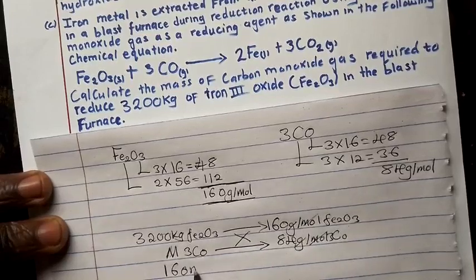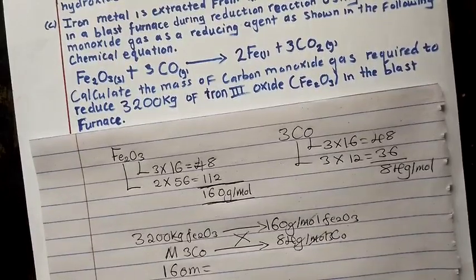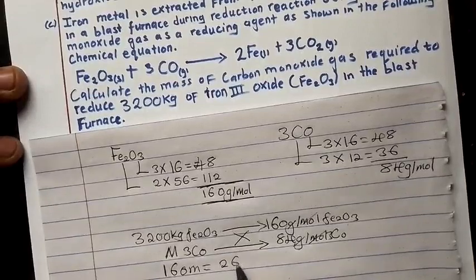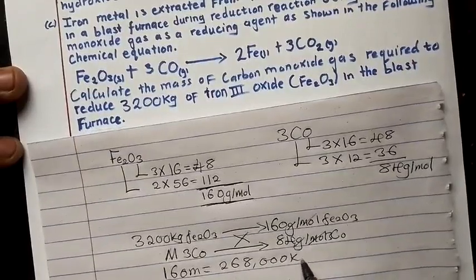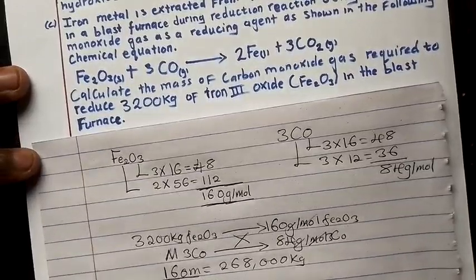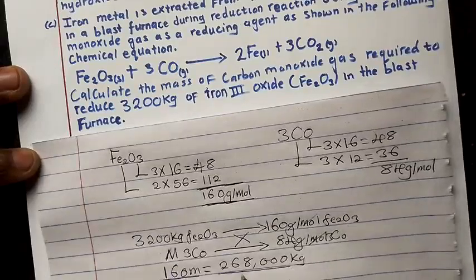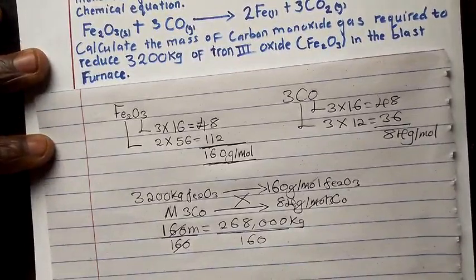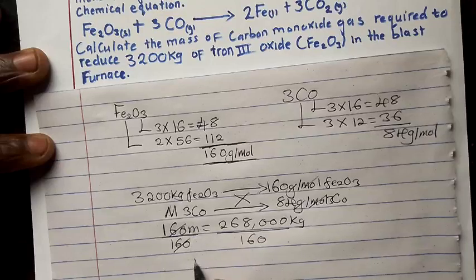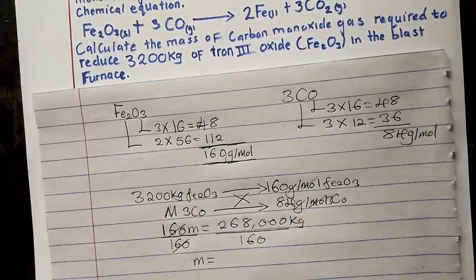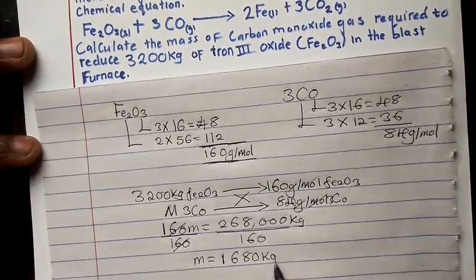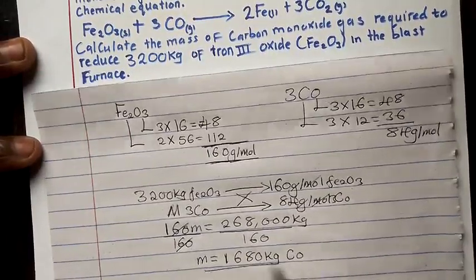Cross-multiplying: M × 160 = 84 × 3,200, giving 268,800. Dividing both sides by 160: M = 268,800 ÷ 160 = 1,680 kg. So the mass of carbon monoxide required is 1,680 kg.